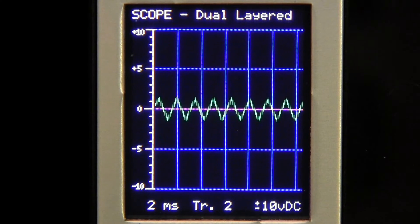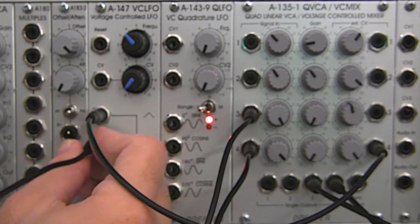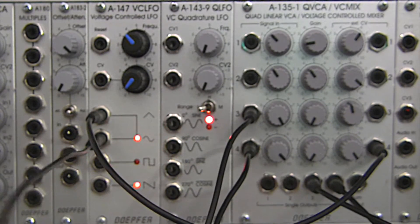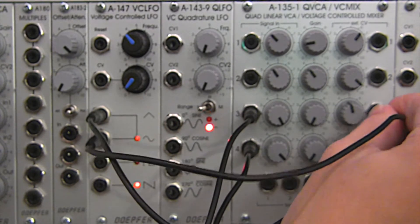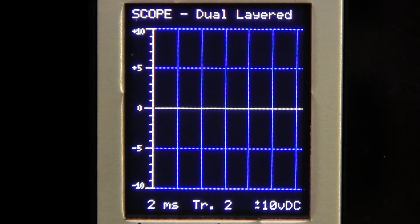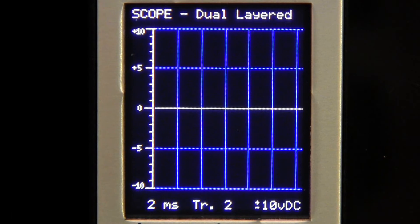Okay. So the idea is going to be the same with our other waveform. I'm going to take the sine wave out from the same A147. And I'm going to take it over into input number three. There we go. Now we can see them both going up and down at the same time.